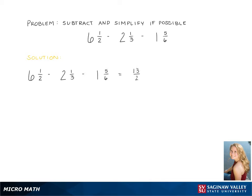6 and 1 half becomes 13 over 2, 2 and 1 thirds becomes 7 over 3, and 1 and 5 sixth becomes 11 sixth.